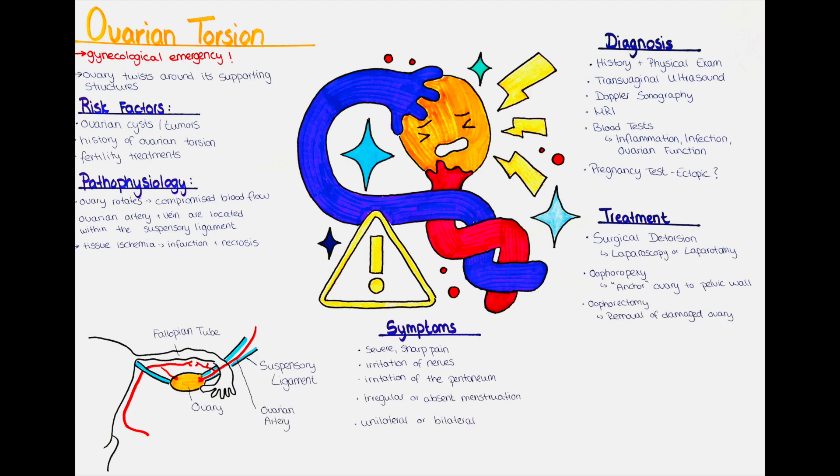Blood tests may be performed to assess markers of inflammation, infection and ovarian function. These can help to rule out other potential causes of symptoms. A pregnancy test is usually done to rule out an ectopic pregnancy, which can present with similar symptoms.